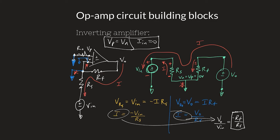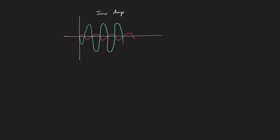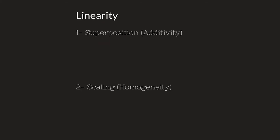The inverting amplifier takes an input signal, amplifies it by R_F / R_S, and inverts it. The non-inverting amplifier does the same without inversion. But what if you want to take the difference between two signals, or build a summing amplifier? That's where the linearity concept becomes essential.